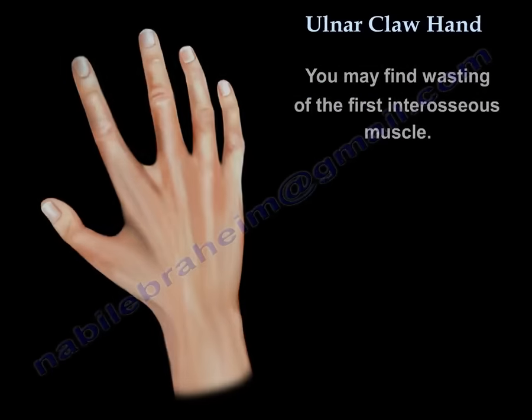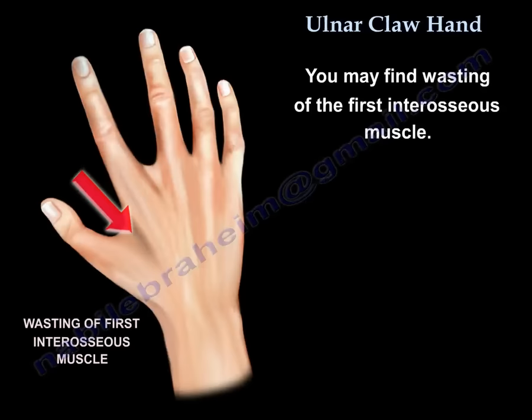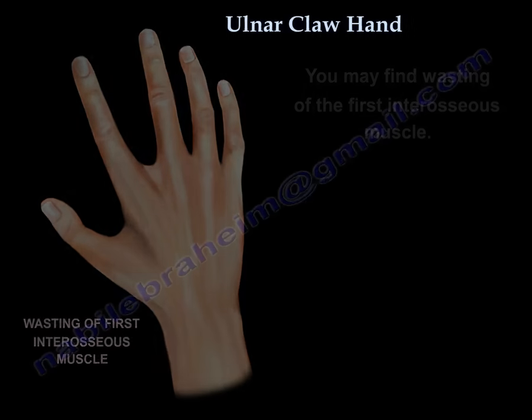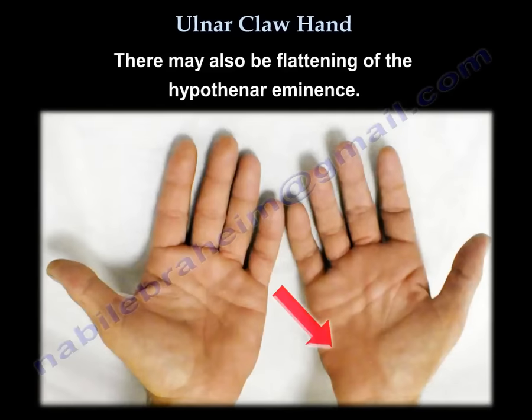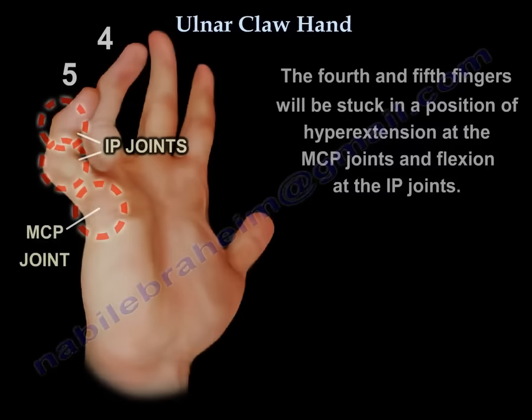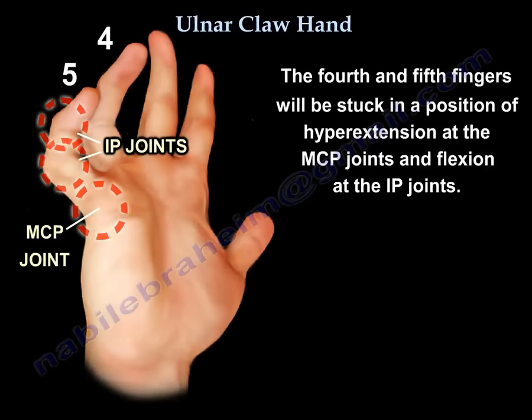You may find wasting of the first interosseous muscle. You may also find flattening of the hypothenar eminence. The fourth and fifth fingers will be stuck in a position of hyperextension at the MCP joints and hyperflexion at the interphalangeal joints.